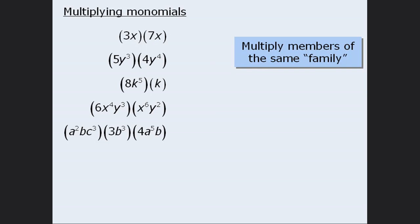Beginning with the first example: when we multiply the constants 3 and 7, we get 21. And when we multiply x by x, we get x squared. In the next example, the product of 5 and 4 is 20.